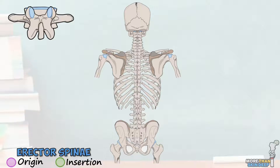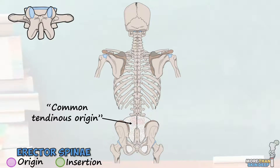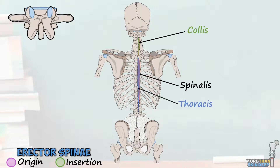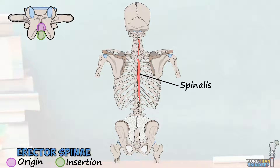All of the erector spinae muscles share a large, common tendinous origin, which connects them to parts of the lumbar and thoracic vertebrae, the sacrum, and a couple of the large ligaments in the pelvis. The first and most medial of the erector spinae muscles is the spinalis, often split into the spinalis cervicis and the spinalis thoracis. The thoracic part originates from the common tendinous origin and the spinous processes of T11 to L3, and inserts into the spinous processes of T2 to T8. The cervicis part originates from the spinous processes of C2 to T10 and inserts into the spinous processes of C2 to C4.